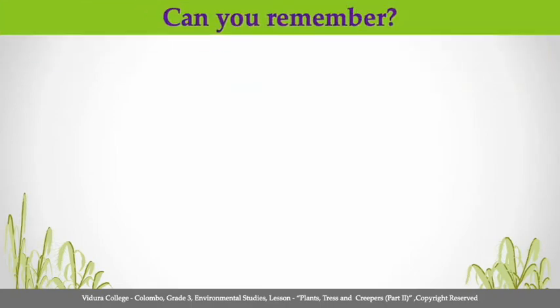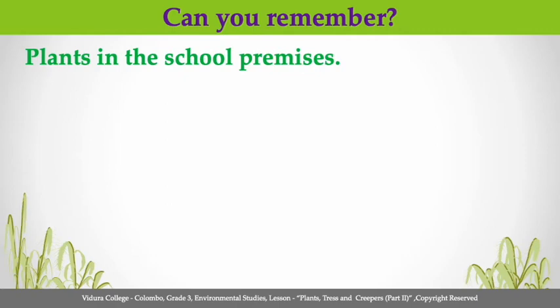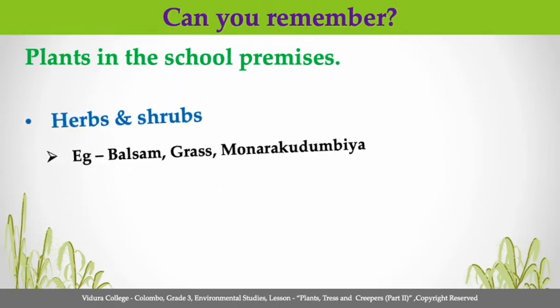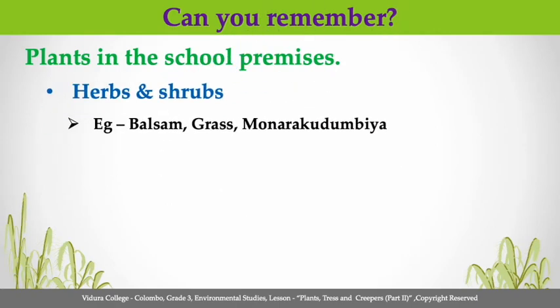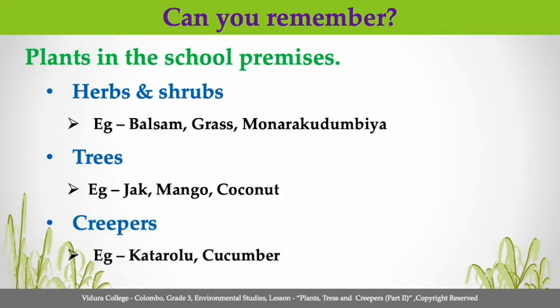Can you remember children, we learned about plants in the school premises as well. In here, herbs and shrubs like balsam, grass, and mondocodumbia. Also trees like jack, mango, and coconut. And also creepers like cutteroo and cucumber can be found in the school premises.